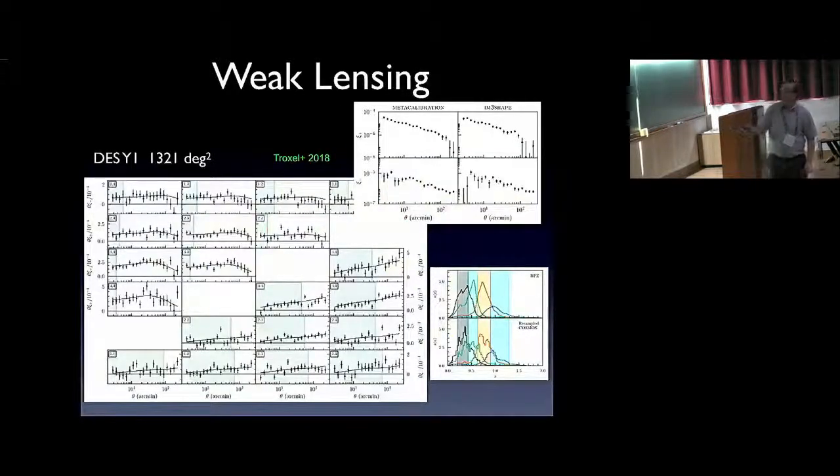In this weak lensing analysis with this first-year data, this is the correlation function of the weak lensing signals as a function of angular scale. This will be small scale, large scale. This is the amplitude of the lensing signal, weak lensing signal coming from the clustering of matter. It turns out there are two such correlation functions. There's a very clear signal in these correlations.